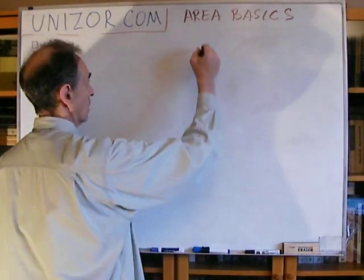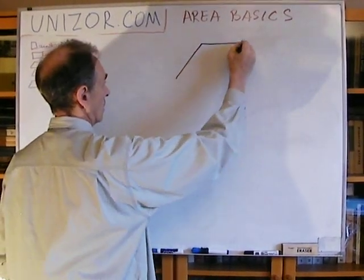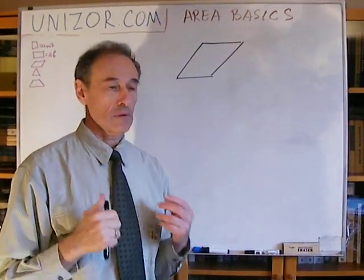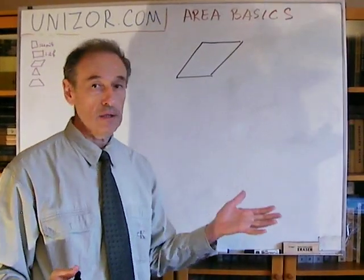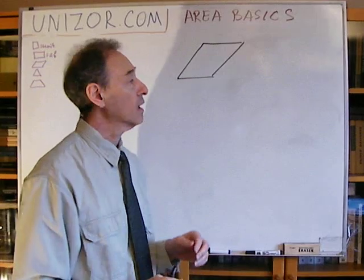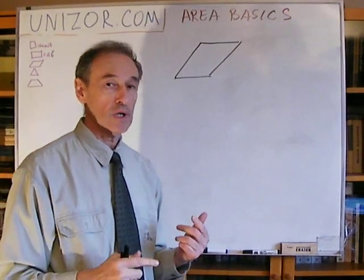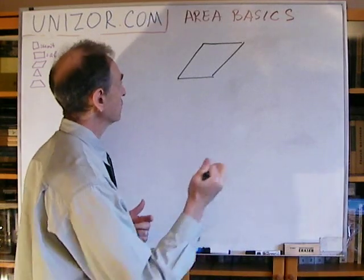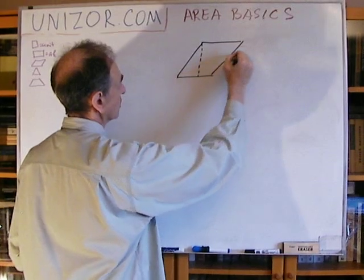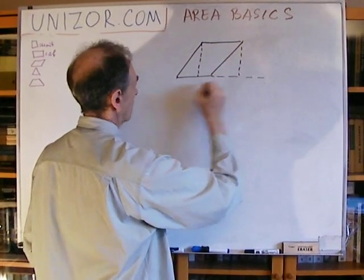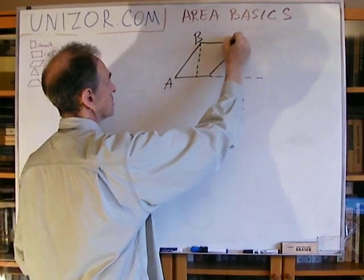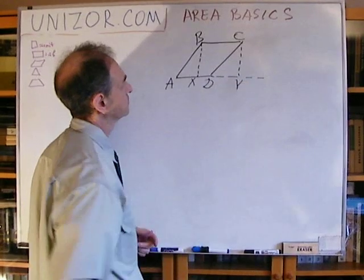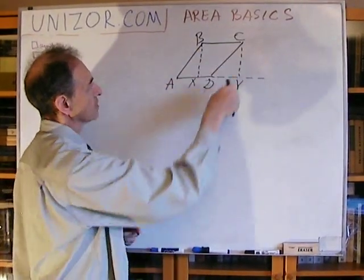Object number one is the parallelogram. How do we calculate the area of a parallelogram? It's not a rectangle, which we know how to fill with squares. However, what we can do is use the fact that congruent figures have the same area. So what I will do is drop a couple of perpendiculars. If this is A, B, C, and D, this would be X and this would be Y — I dropped two perpendiculars from B and C.